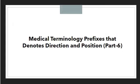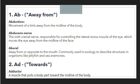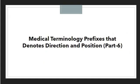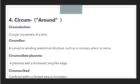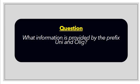These are the medical terminology prefixes used to showcase direction, position, and movement — ab, ad, ante, and circum. Remember, we are discussing just the prefixes, not the entire terminology. That's all for today. In the next session we will discuss more prefixes. The question for today is: what information is provided by the prefixes 'uni' and 'olig'? Please share your answers in the comment section. Thank you for watching.